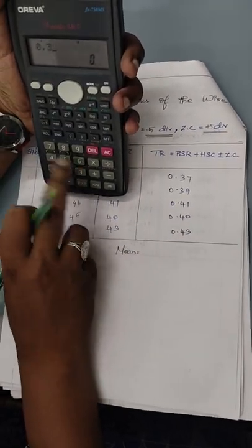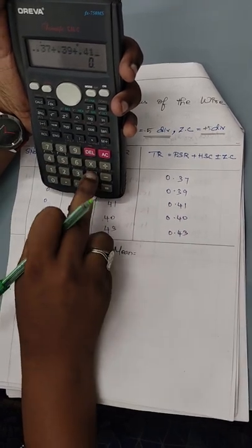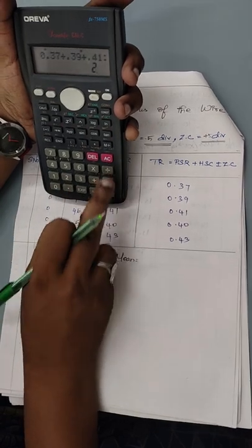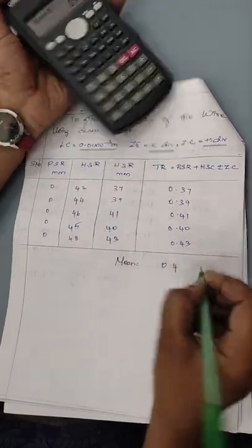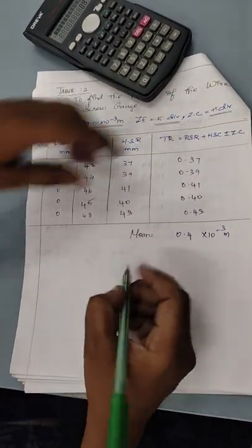So add and divide up all this now. 0.37 plus 0.39 plus 0.41 plus 0.40 plus 0.43 divided by 5 gives you 0.40 into 10 to the power minus 3 meter.